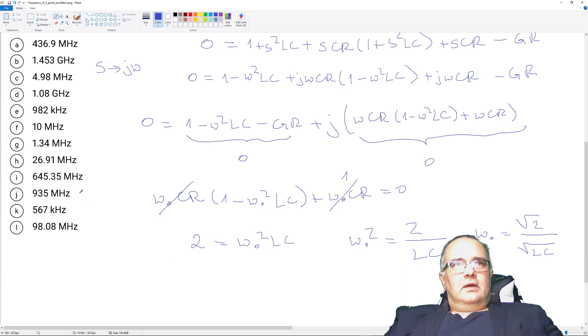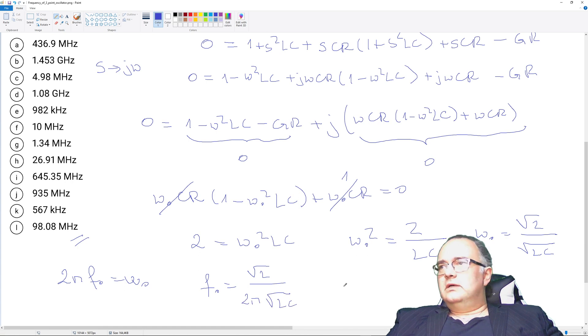The answer is required to be in Hertz. So I have to find f which is square root two divided by 2π times square root LC.